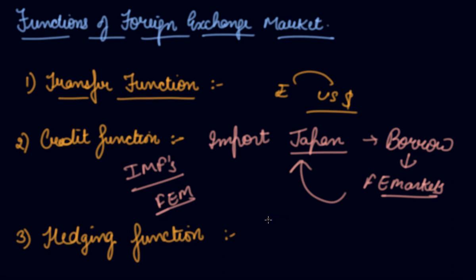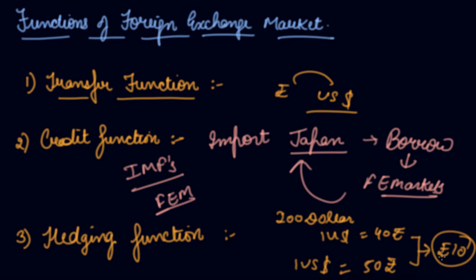Suppose you have imported machinery of $200, and when you placed an order, $1 was 40 rupees. But at the time of payment after one month when your machinery was delivered to India, there were fluctuations in demand and supply. So $1 became 50 rupees. Now you will be paying an extra 10 rupees per dollar, so you are in a position of loss.